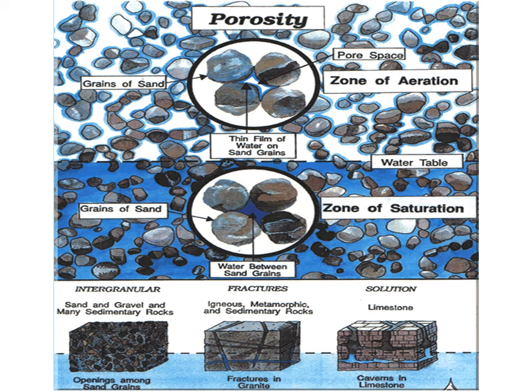Then you have a zone of saturation where air is missing and there's just water between the grains — sand, clay, gravel, or whatever is there. You can have different types of material with different properties affecting groundwater. Sand and gravel and various sedimentary rocks have openings, but you can also get fractures in igneous, metamorphic, and sedimentary rocks. In limestone you get caverns where water, being slightly acidic, eats out the limestone — creating rivers of water going through that limestone.